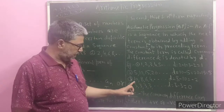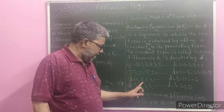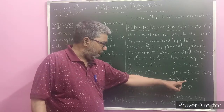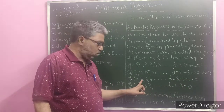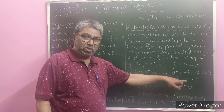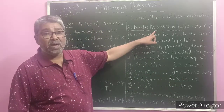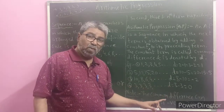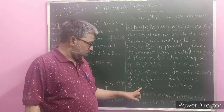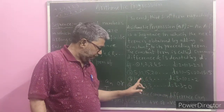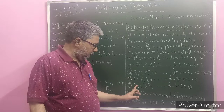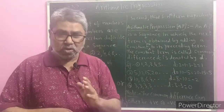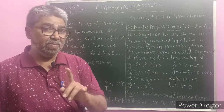The third example is 10, 8, 6, 4, and so on. Here, next term minus preceding term: 8 minus 10 is minus 2, or 6 minus 8 is also minus 2, or 4 minus 6 is also minus 2. So this is also an example of arithmetic progression. The fourth example is 3, 3, 3, 3, and so on. Here, the value of the common difference d is 3 minus 3, which is 0. In this example, we get the next terms by adding 0 to the preceding term. So this is also one of the examples of arithmetic progression.